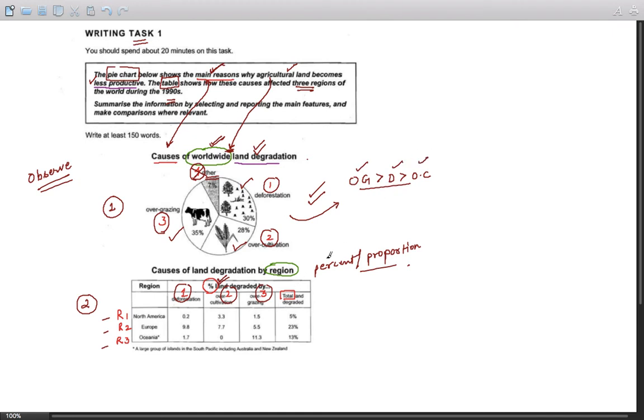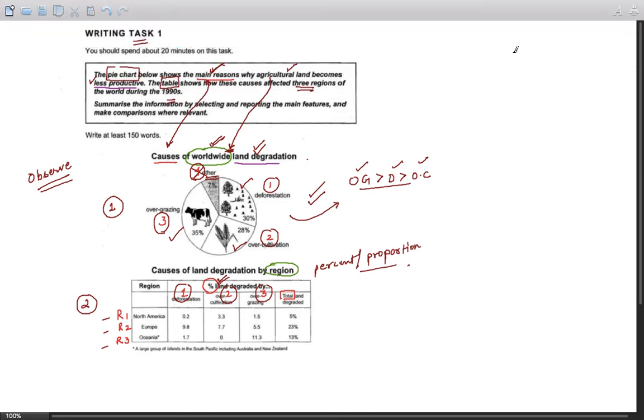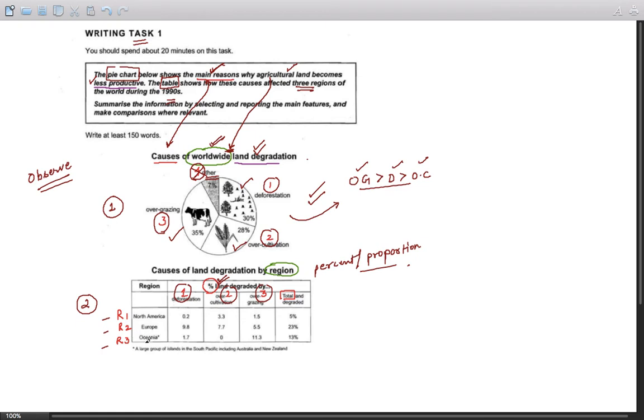So here, all I can see in the pie chart is that for the worldwide agricultural land degradation, the order is 1, 2, and 3. Now, as far as the table is concerned, it is always better to move in two dimensions: dimension one is horizontally, dimension two is vertically. Can you see any major main features, major trends in these two dimensions?